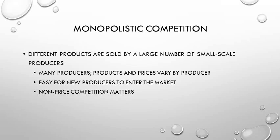The second type of market structure is monopolistic competition. This is where different products are sold by a large number of small-scale producers. Products and prices will vary by the producer — you may have high quality products and lesser quality products, and a similar range of producers. It's still easy for new producers to enter this market, but in monopolistic competition, non-price competition does matter. The quality of service, extra promotions, and advertising will affect the amount of business you do.